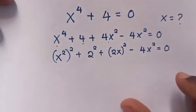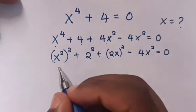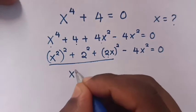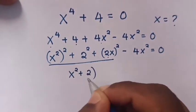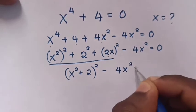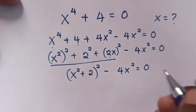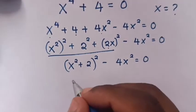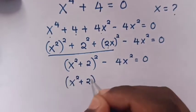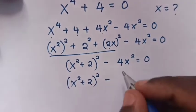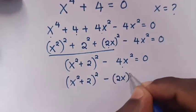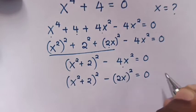Then, from this part of the equation, when we factorize it will be equal to (x² + 2)² minus (2x)² is equals to 0. Now, (x² + 2)² minus (2x)² is equals to 0.